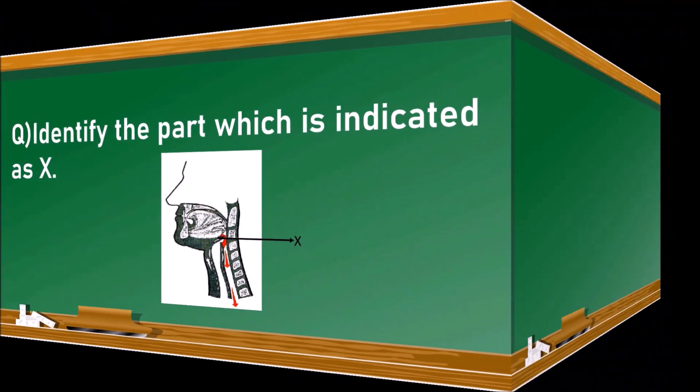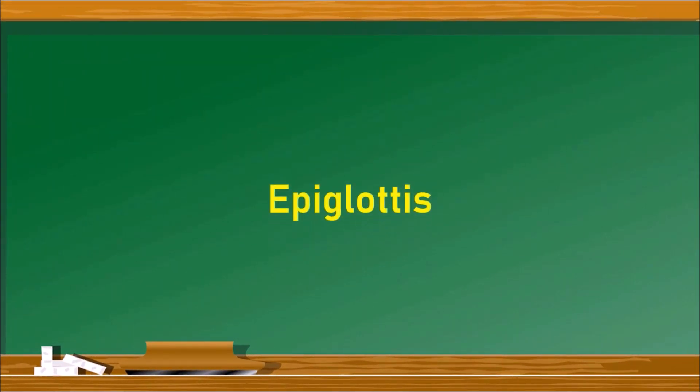Identify the part indicated as X in the given diagram. The part indicated as X is the epiglottis, which is a flap-like wall that prevents the entry of food into the respiratory tract.